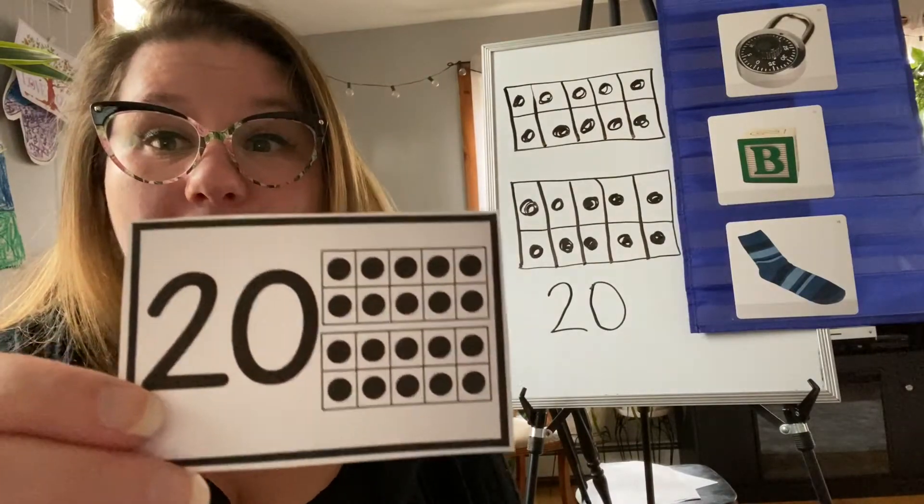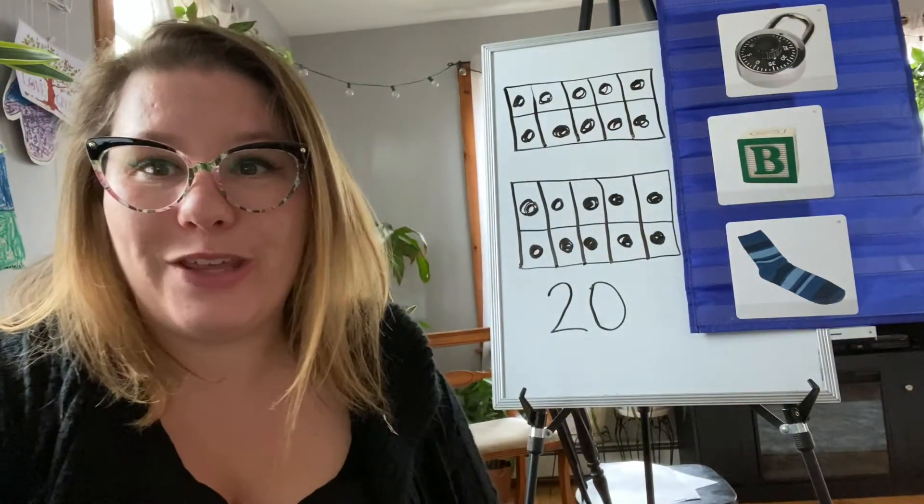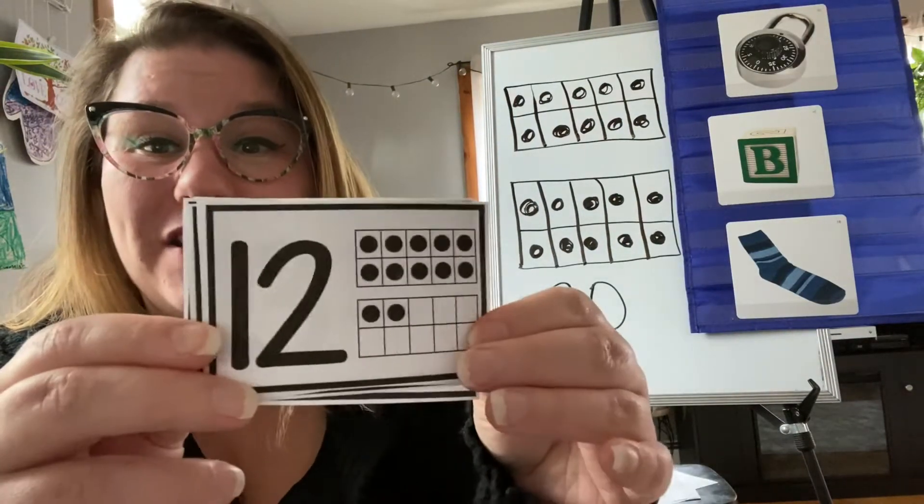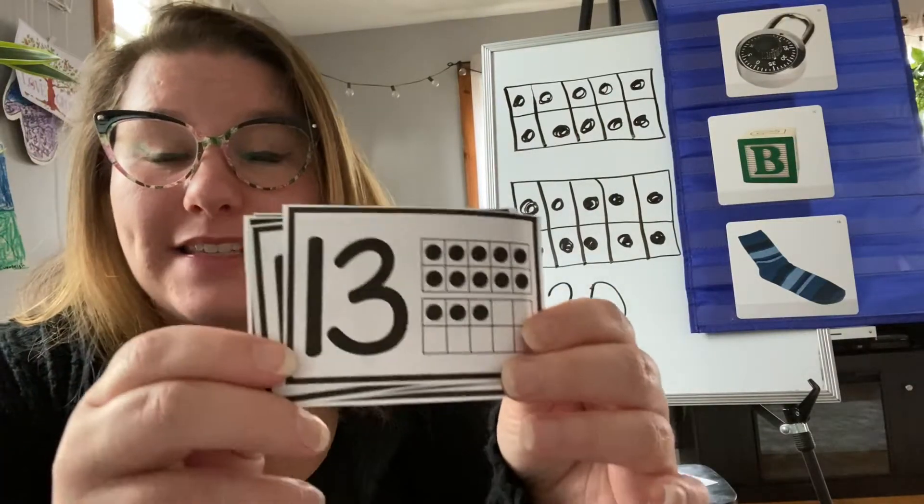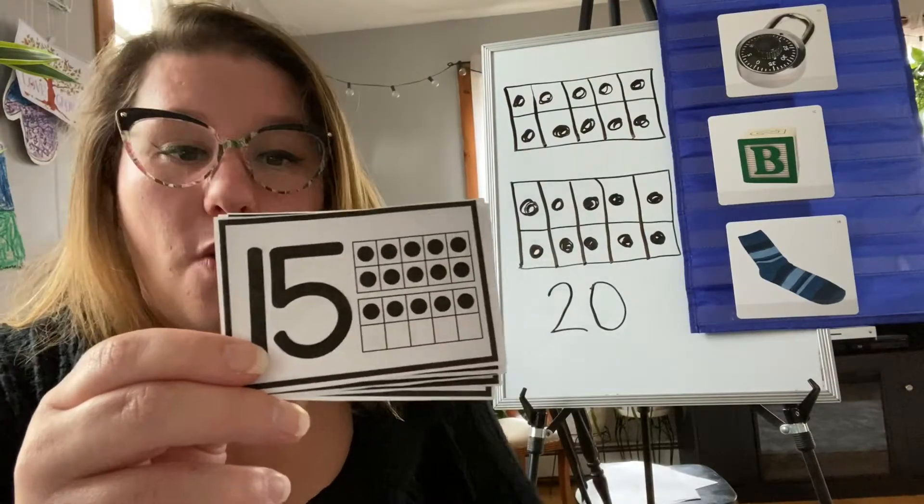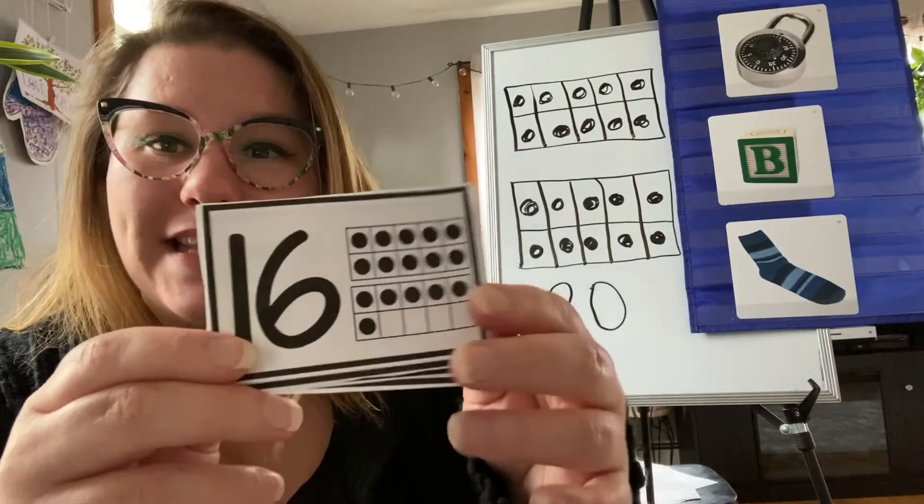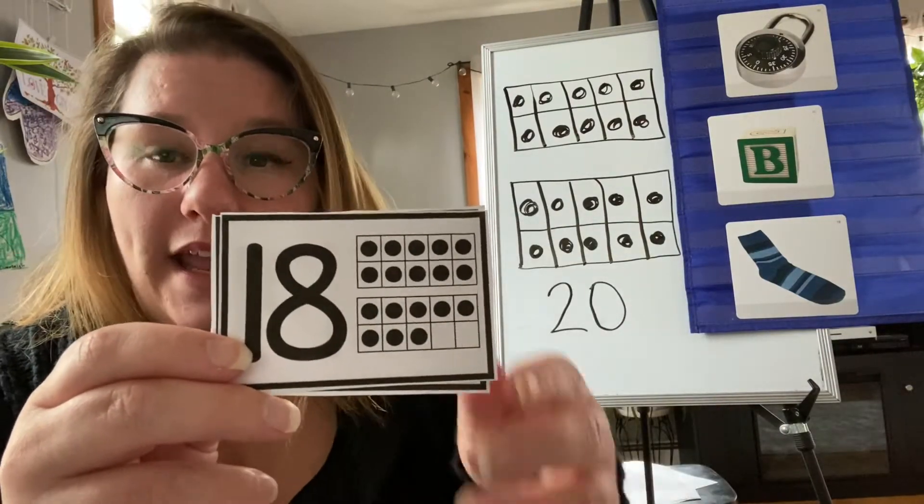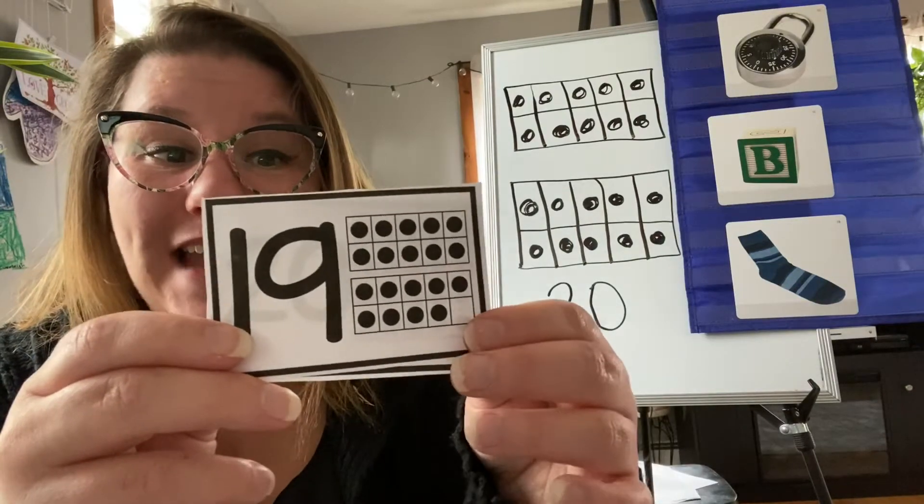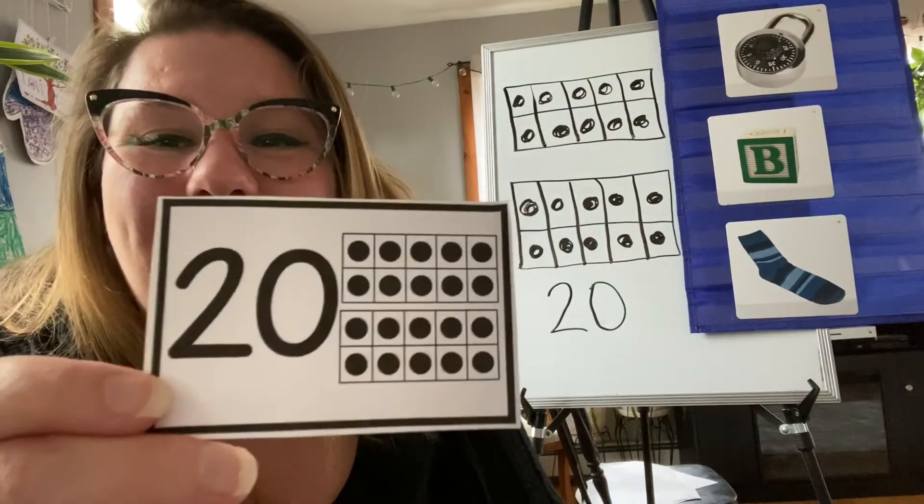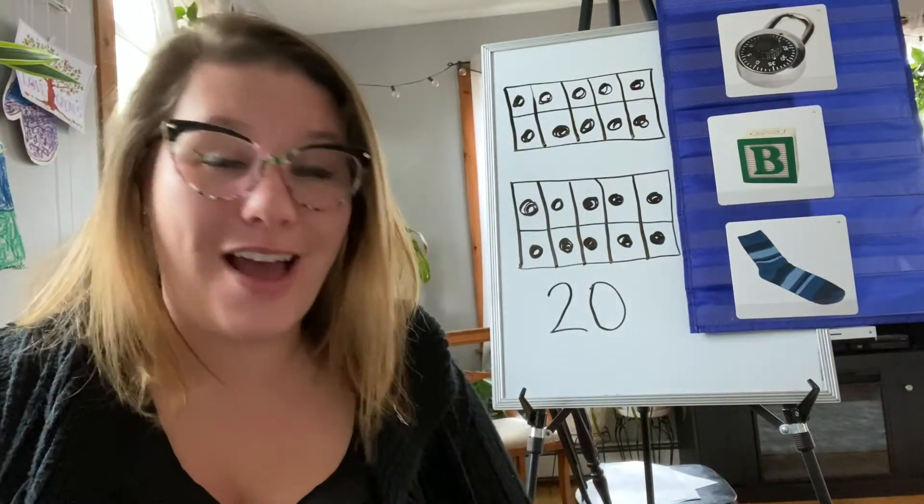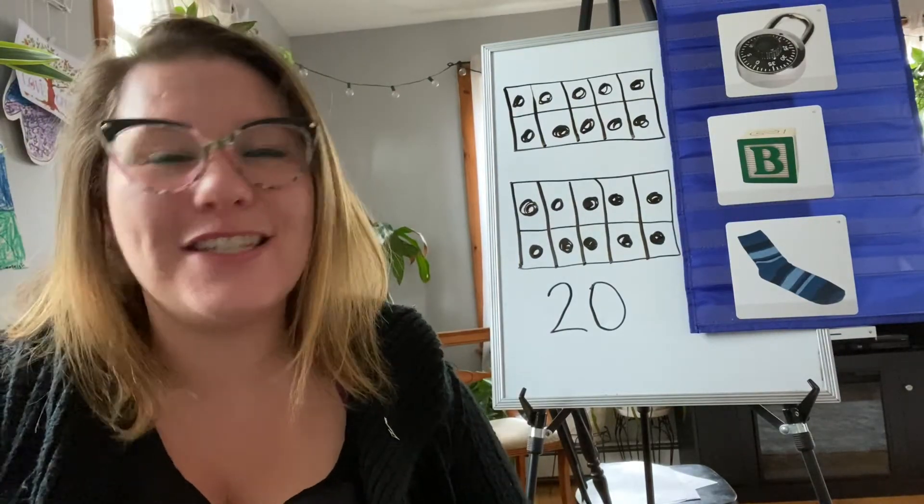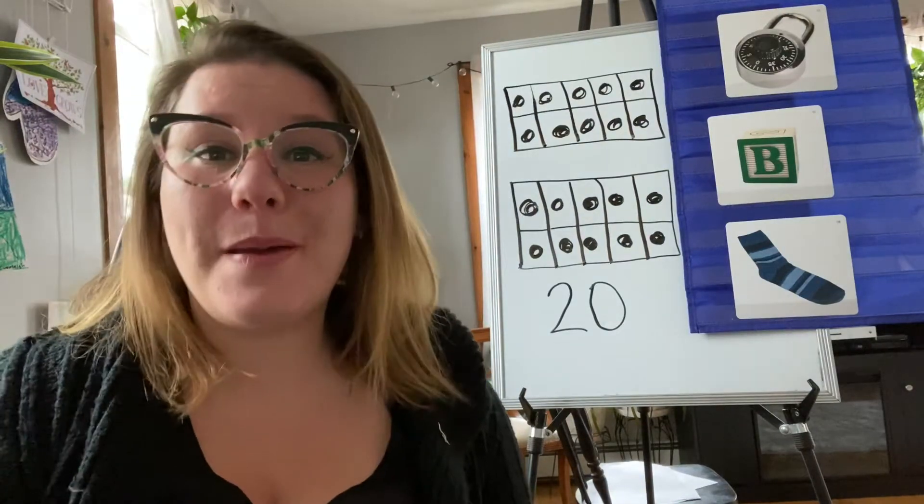And two and zero make 20 a hero. Wow, we're done with our chant. Let's do it again. [Repeats chant faster.] Wow, you got through all of your numbers in your chant! We're gonna keep doing this chant for a few more days just so we can get it in our head, because that really helps us remember our teen numbers.